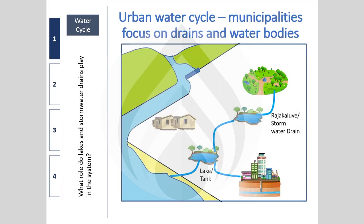Lakes and water bodies become interesting because of the juxtaposition — both the water supply and wastewater systems exist simultaneously in the city. On the stormwater side, most cities have drains which are now full of sewage, but that was not their original design intent. Originally, they were designed to carry rainwater into lakes and tanks, but over time as cities grew, they came to carry many other things.